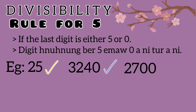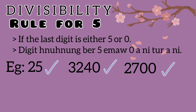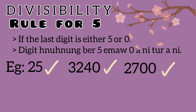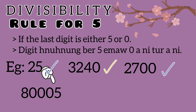Example: 2700. The last digit is 0. Zero is in 0, so 2700 is divisible by 5. Example: 80005. The last digit is 5, so 80005 is divisible by 5.